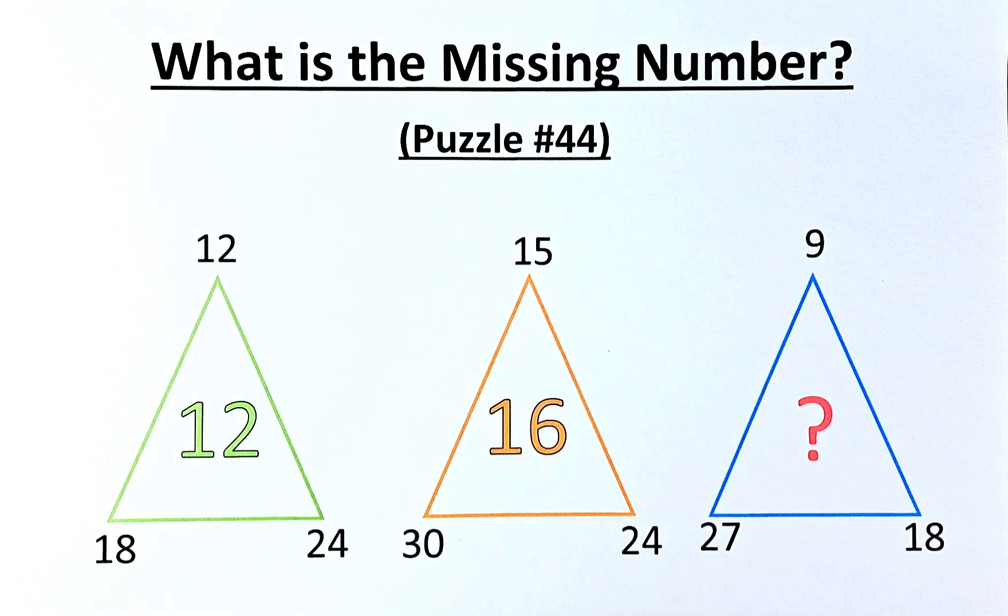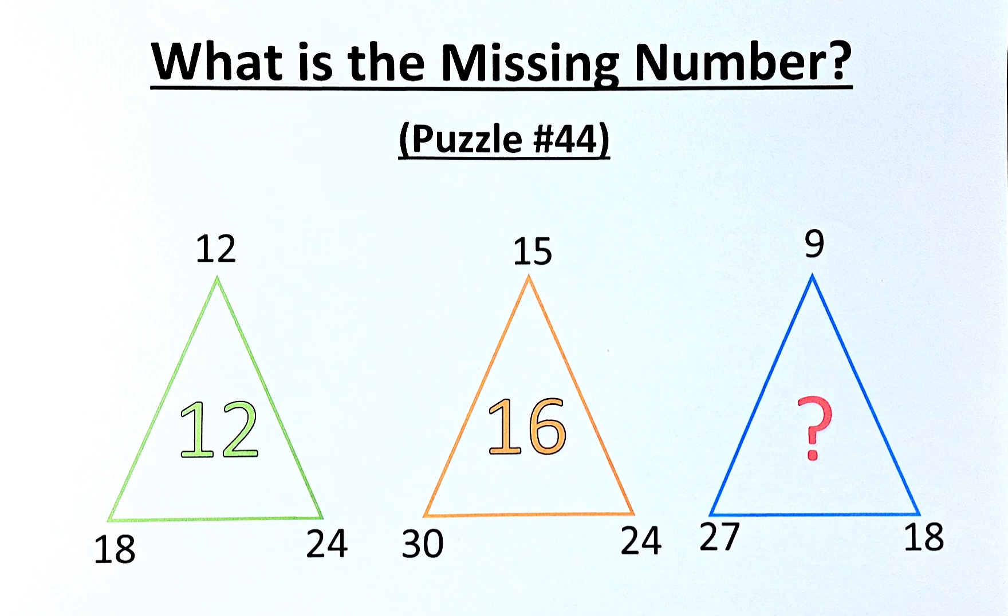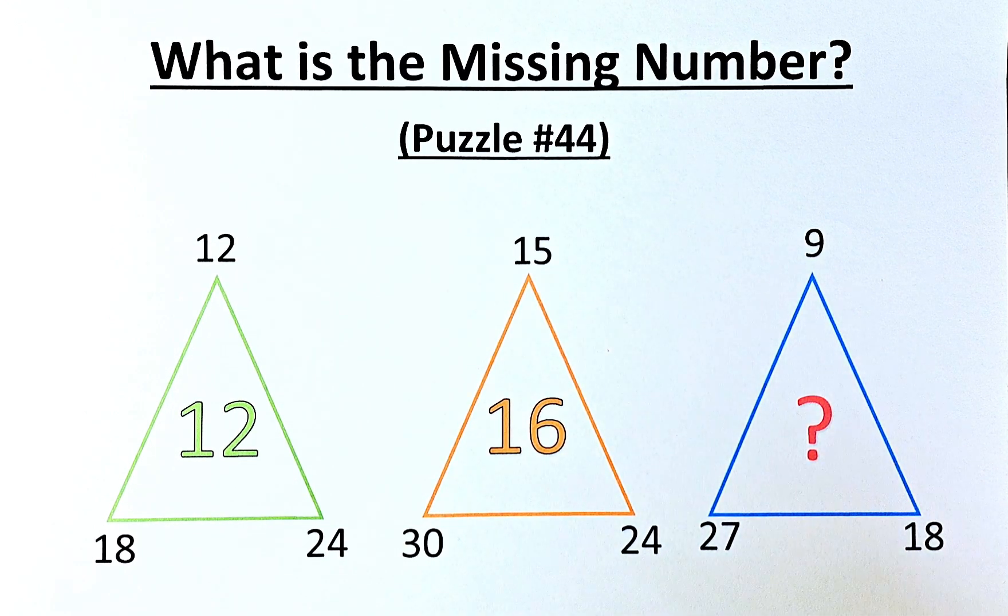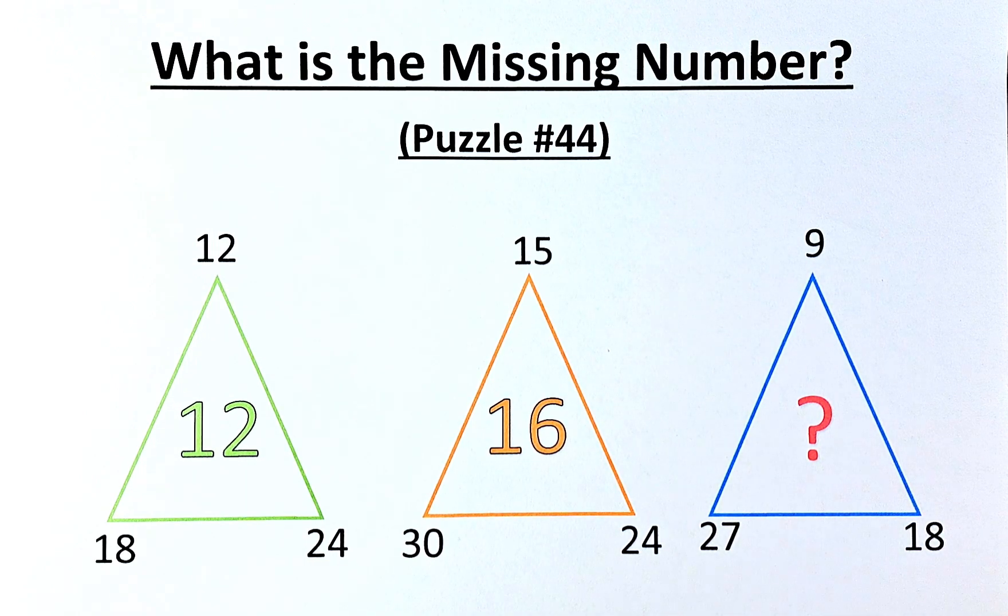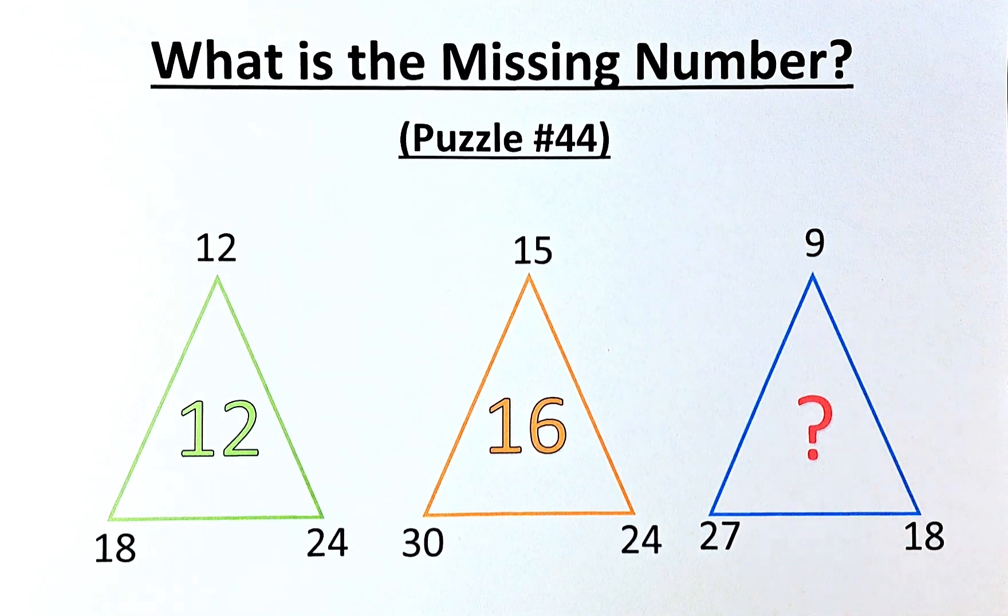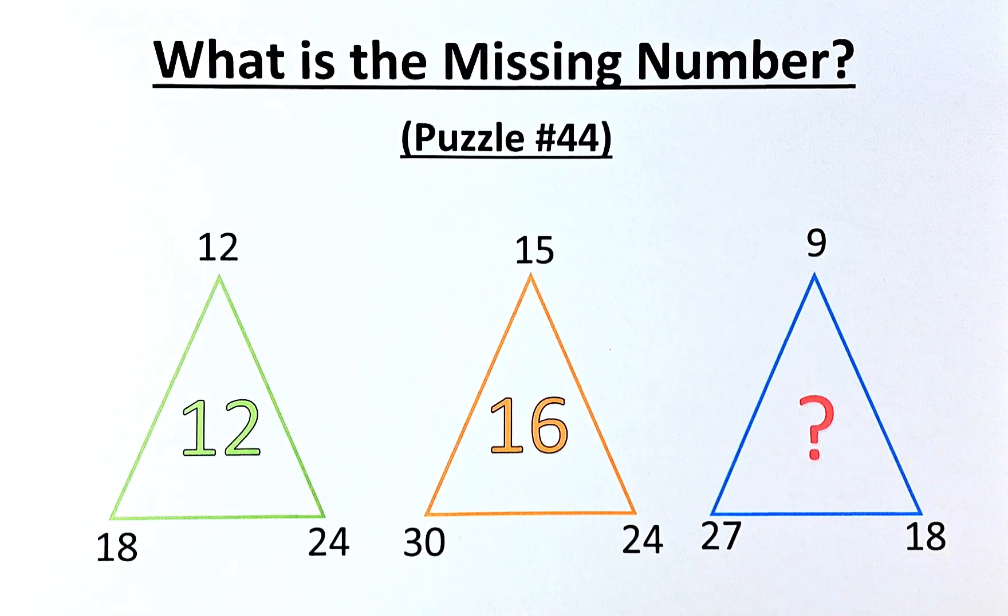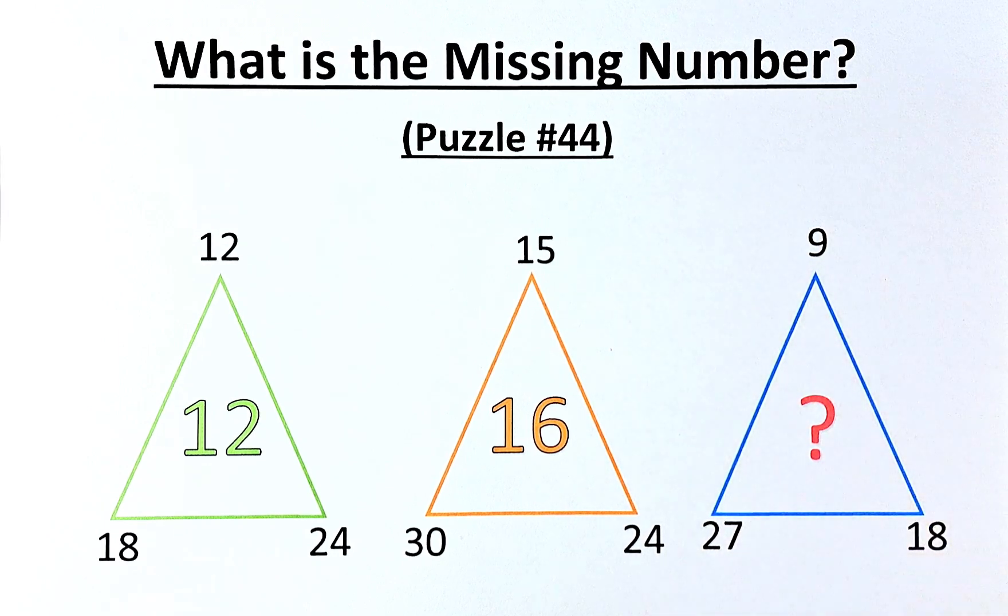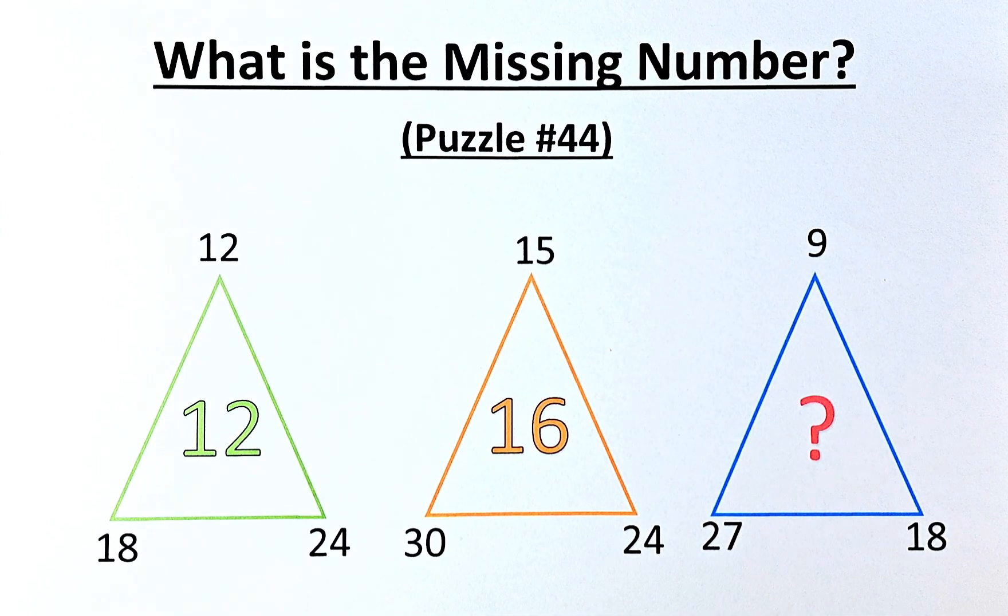The numbers in the puzzles are as follows. In the first green triangle, the numbers are 12, 18 and 24, and the middle number is 12. In the orange triangle, the numbers are 15, 30 and 24, and the middle number is 16. And in the blue triangle, the numbers are 9, 27 and 18. As usual, we need to know what is the missing number represented by the question mark.